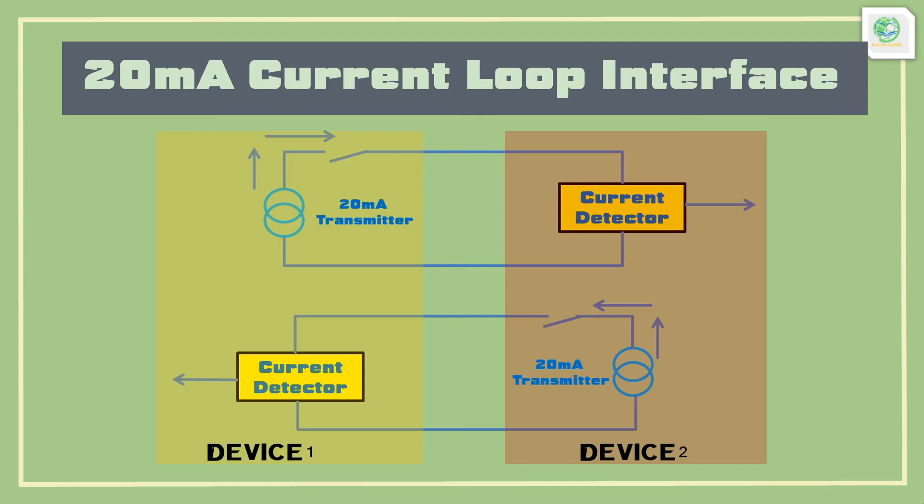The transmission wire pair for device 1 is the reception wire pair for device 2. When transmission pair of wires from device 1 are sent with data bits in form of current signal, the current detector at device 2 detects data bits and forwards them for processing.